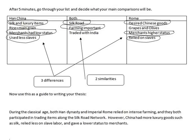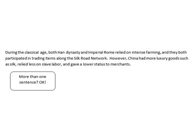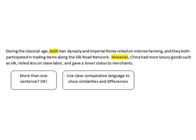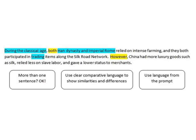Now I turn these similarities and differences into a thesis statement. I start by listing similarities: during the classical age, both Han Dynasty and Imperial Rome relied on intense farming, and both participated in trading items along the Silk Road network. However, China had more luxury goods such as silk, relied less on slave labor, and gave a lower status to merchants. A few things about the thesis: multiple sentences are perfectly okay. As long as it addresses both similarities and differences for both places, you're fine. Use clear comparative language — I used 'both' to show similarity and 'however' to show differences. Make sure your thesis uses the same language as the prompt to show you're on topic.